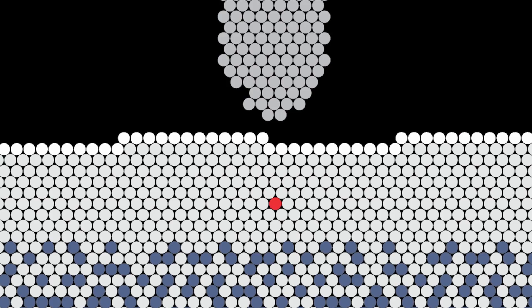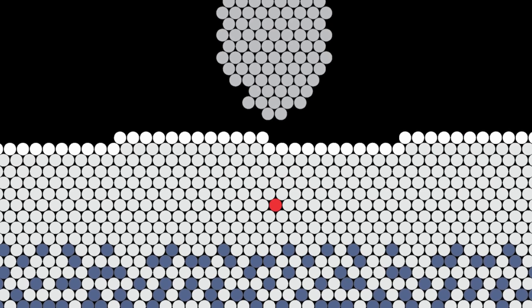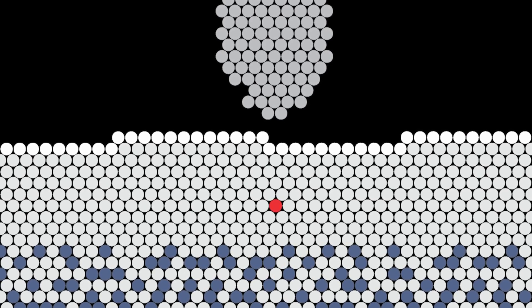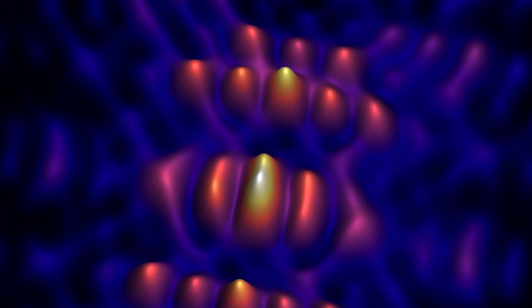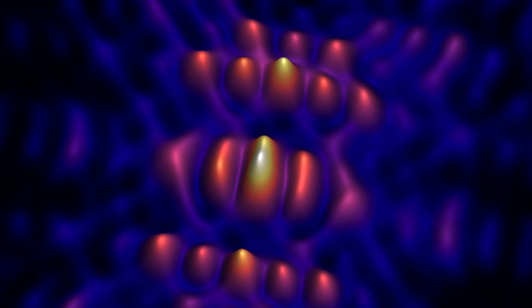With our latest results, we've just got closer to that quest. Our approach relies on precision placing single phosphorus atoms in silicon and using the electron spin on that phosphorus atom as the quantum bit, or qubit.